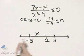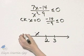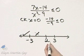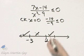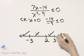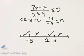If you check a number less than negative 3, it will make the original inequality true. Between 2 and 3, it will make the inequality true. And greater than 3, it will make the original inequality false.